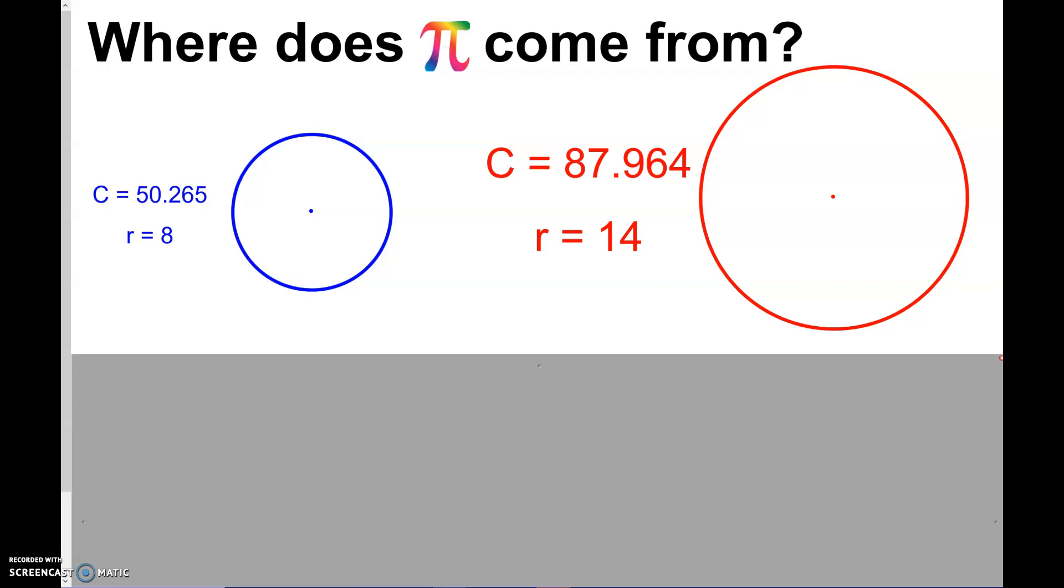So if we take the circumference and divide by two radius or just divide by the diameter, so circumference divided by diameter. So if you take this 50.265 and divide by the diameter, which would be 8 times 2, 16, you are never going to guess what you're going to get. But it has something along the lines of 3.14.